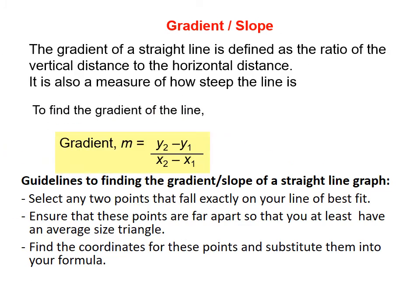We first want to define what we mean by gradient or slope of a graph. The gradient or slope of a straight line graph is defined as the ratio of the vertical distance to the horizontal distance. It is also a measure of how steep the line is. So your gradient is measuring how your line or straight line graph is rising compared to how it's running.